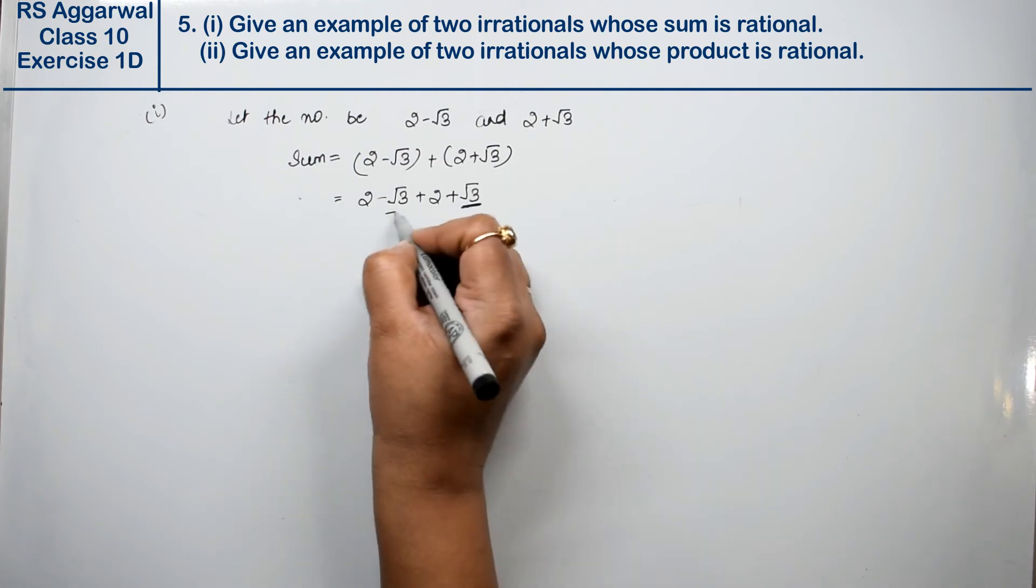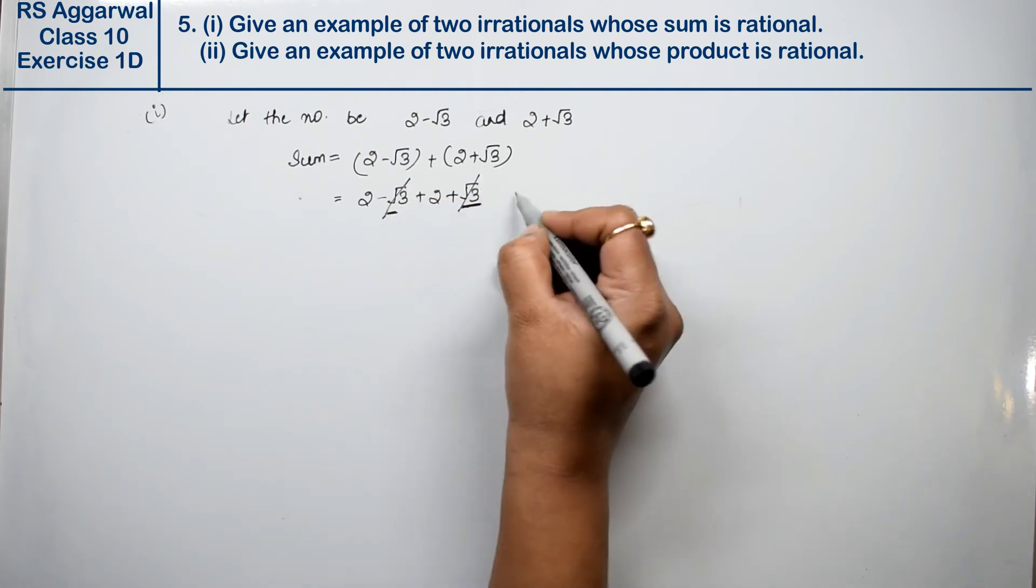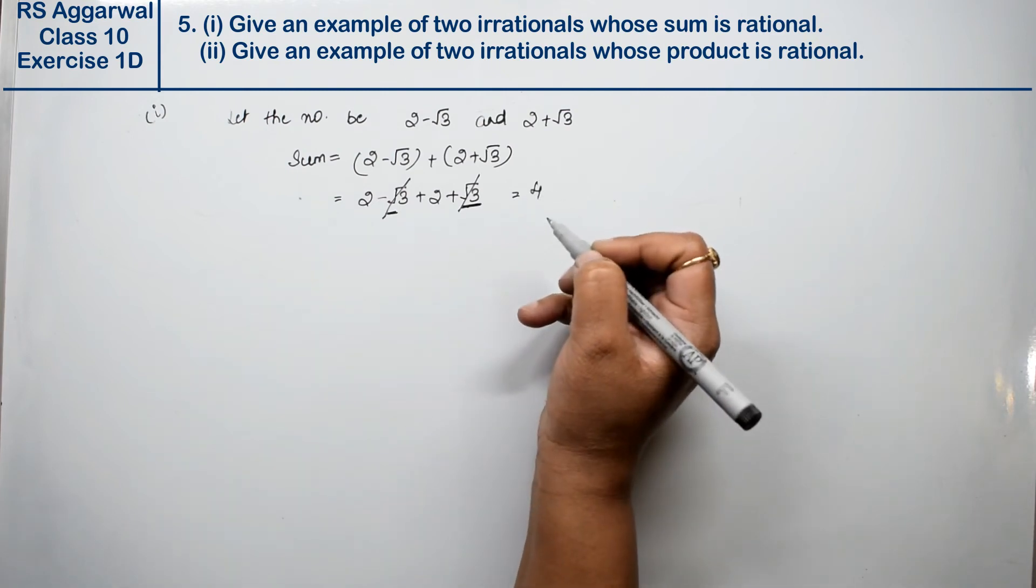Now if this root 3 is plus and minus, then we will cancel both. So what is the answer? 4 is the answer.